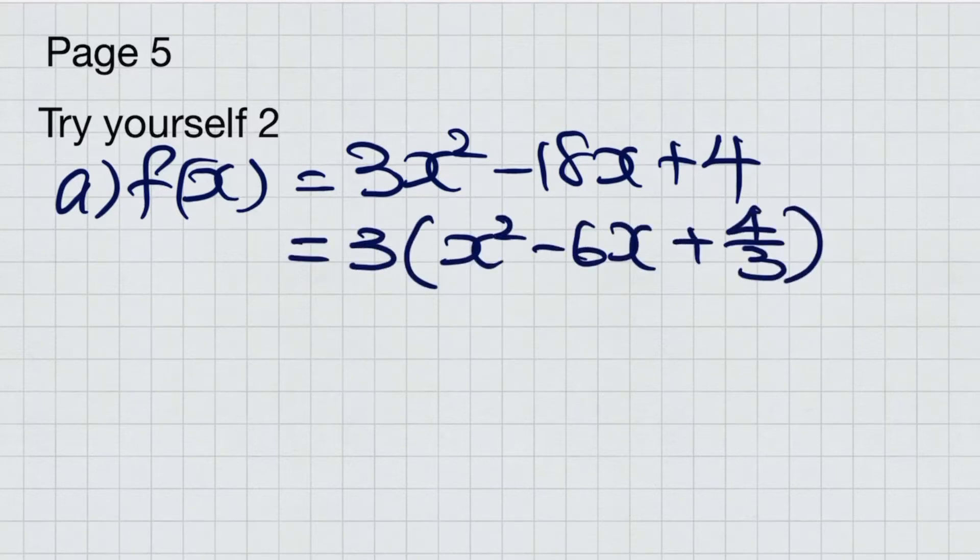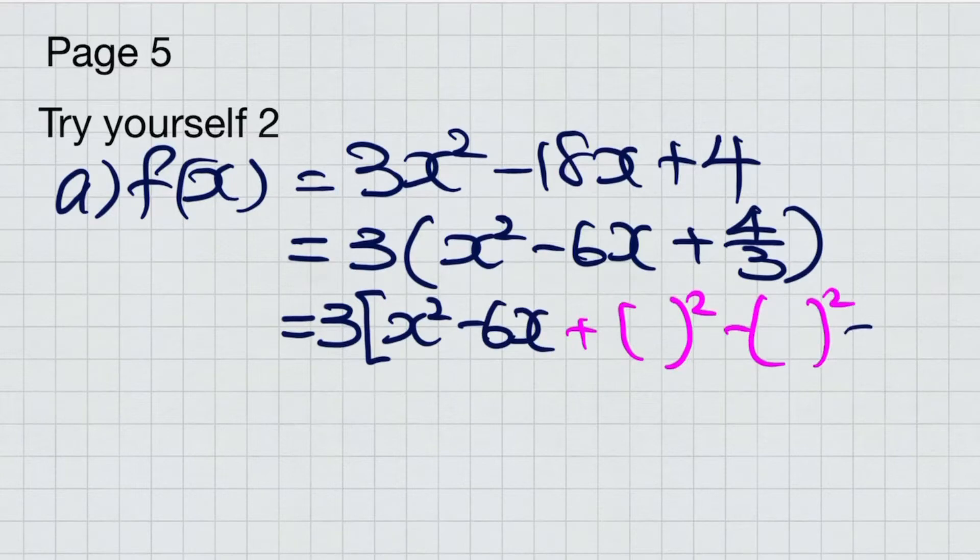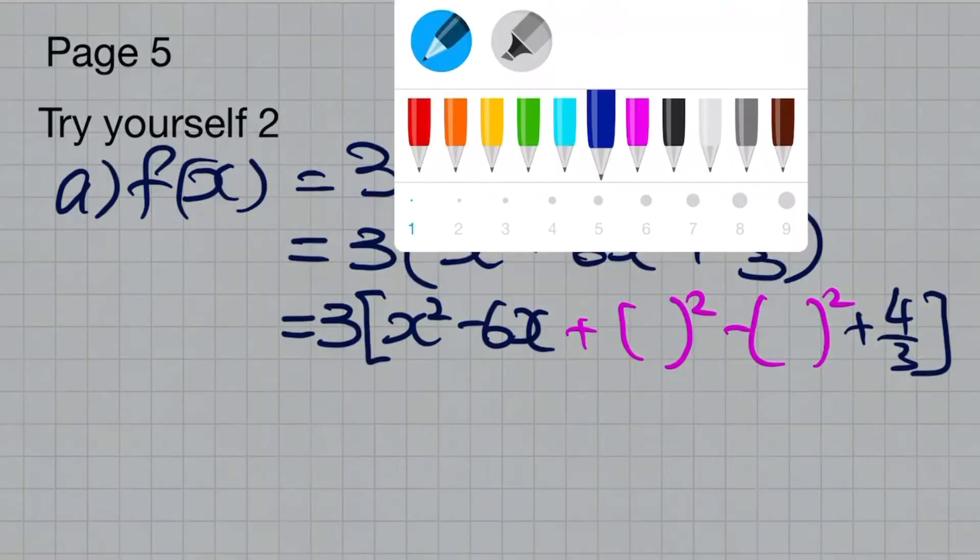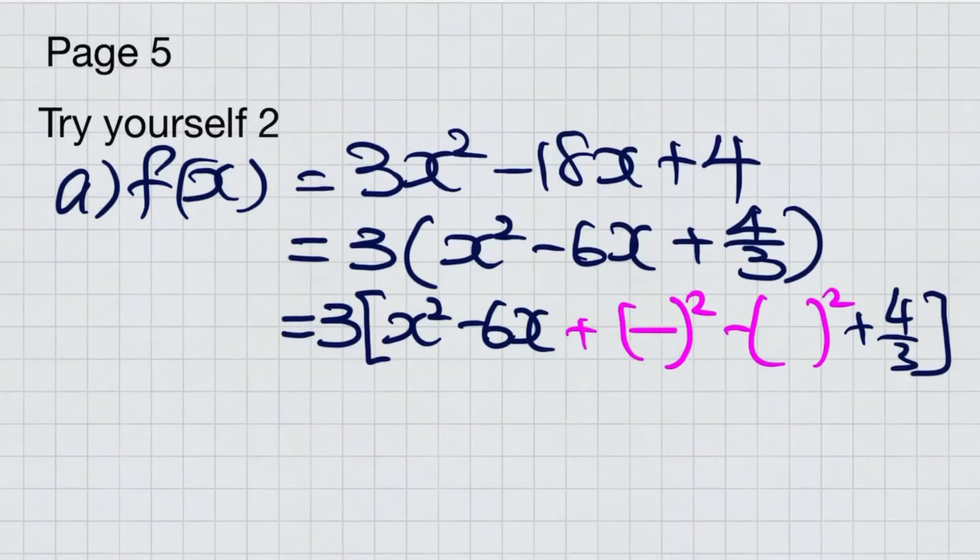Step 2: Add in plus bracket squared minus bracket squared. Fill in the bracket with the coefficient of x, always divided by 2.